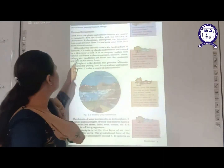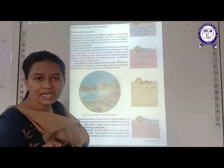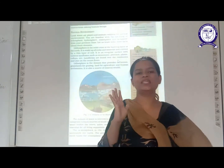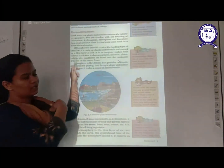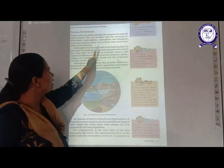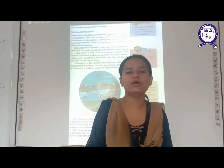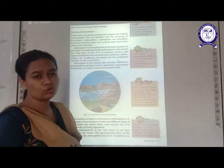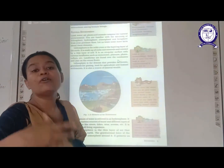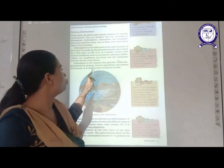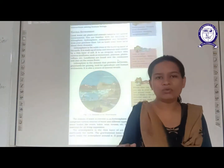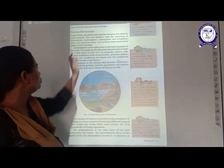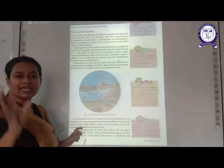The first major domain of the Earth is lithosphere. Lithosphere is the solid crust or the hard top layer of the Earth. The layer which is visible to us is called as lithosphere. We use it by planting trees, for growing plants, for forests. Different landforms like plains, plateaus, and mountains — where are all these found? They are all found in the domain called lithosphere.